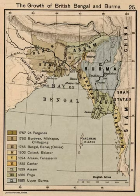Sir Bampfylde Fuller was the province's first lieutenant governor. He served for a year in office, and resigned in 1906 after disagreements with Lord Minto and pressure from the British Parliament. He was succeeded by Sir Lancelot Hare, who in turn was succeeded by Sir Charles Stuart Bailey.